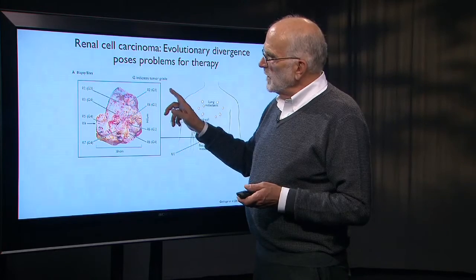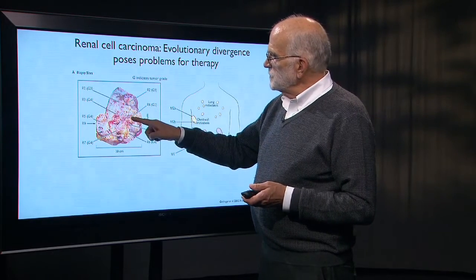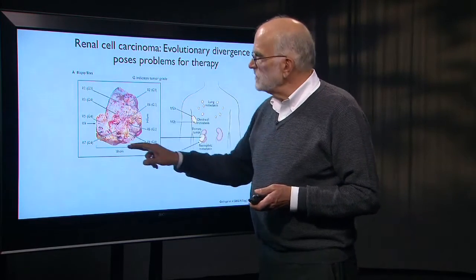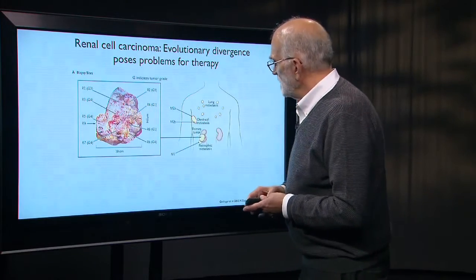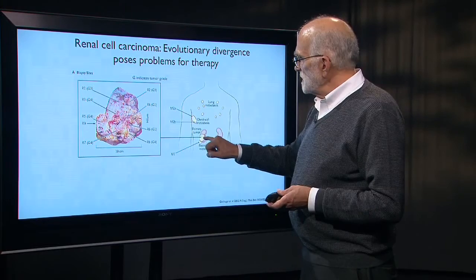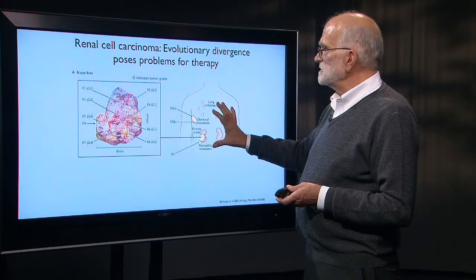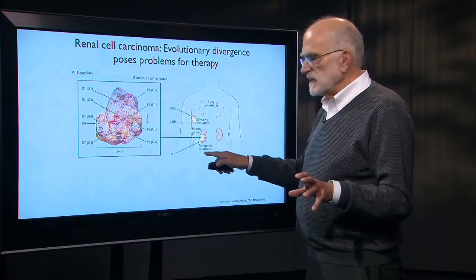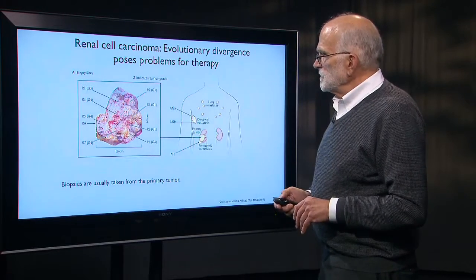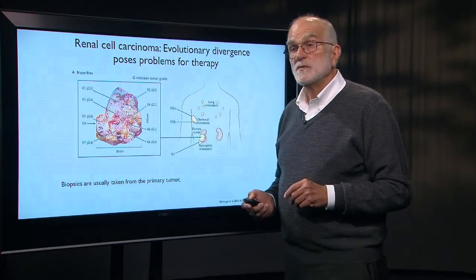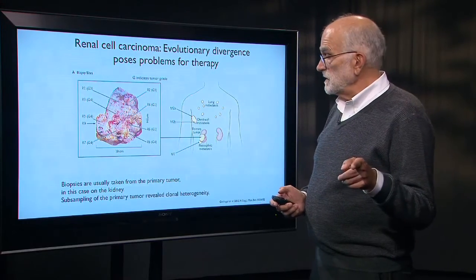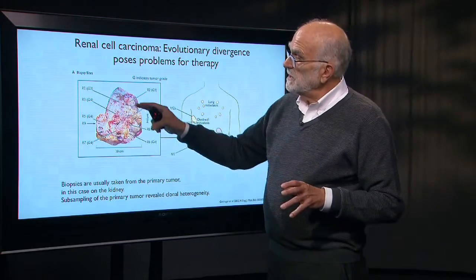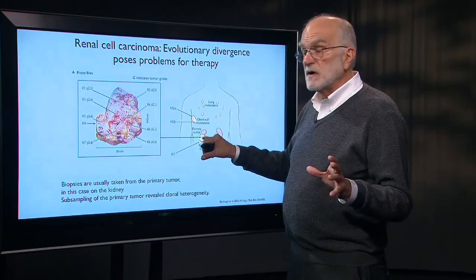G is indicating tumor grade. So this is a grade one tumor here. This is a grade six tumor here. And these clones are scattered all over the surface of this kidney. This sample was taken out of a kidney right here. The metastases went into the chest wall and into the lung. There was also one that was just next to the kidney. So the biopsies are usually taken out of the primary tumor, and that was on the kidney in this case. Subsampling of the primary tumor showed that there was all of this clonal heterogeneity just there in this part of the cancer.